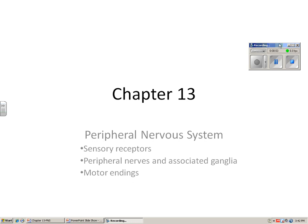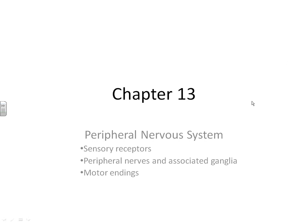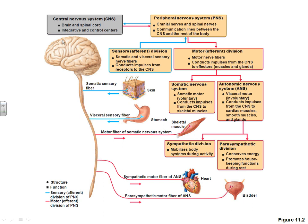Continuing our discussions of the nervous system, we're now moving into the peripheral nervous system in Chapter 13. We will be looking at sensory receptors, peripheral nerves, and all the associated ganglia, as well as motor endings. Let's flip back to the figure from Chapter 11 — in Chapter 12 we covered the central nervous system, which included just the brain and the spinal cord. Now we're looking at the peripheral nervous system.